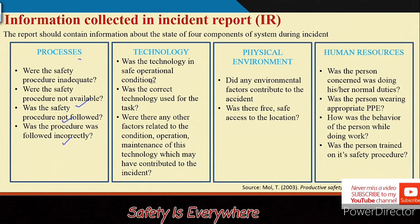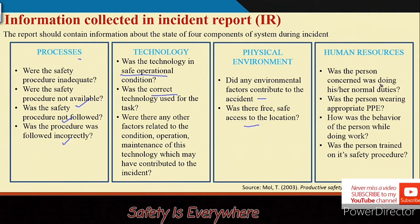Technology-related questions cover whether the correct technology was used and whether it was maintained and operated in good condition. Physical environment relates to lighting, heat, humidity, and other conditions that must be comfortable for workers. Human resource-related questions ask whether the person was doing normal duties, wearing appropriate PPE, whether they were competent, and whether they were trained on safety procedures.